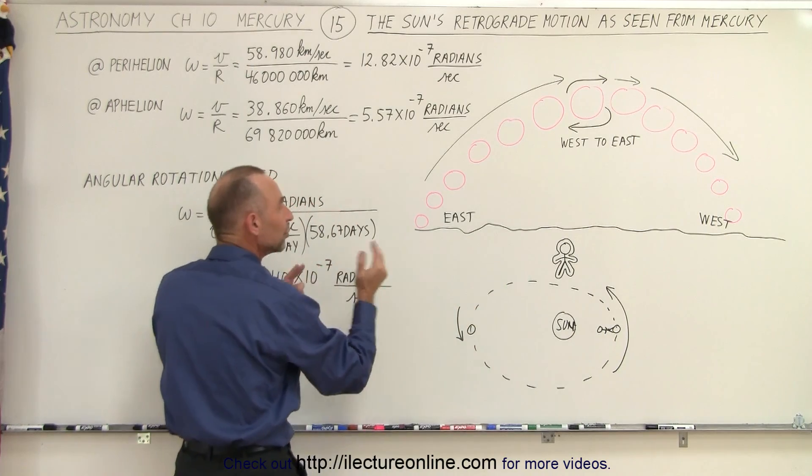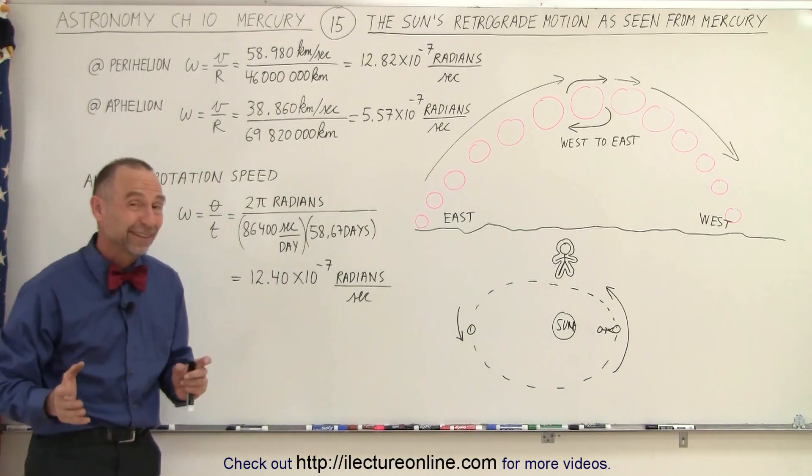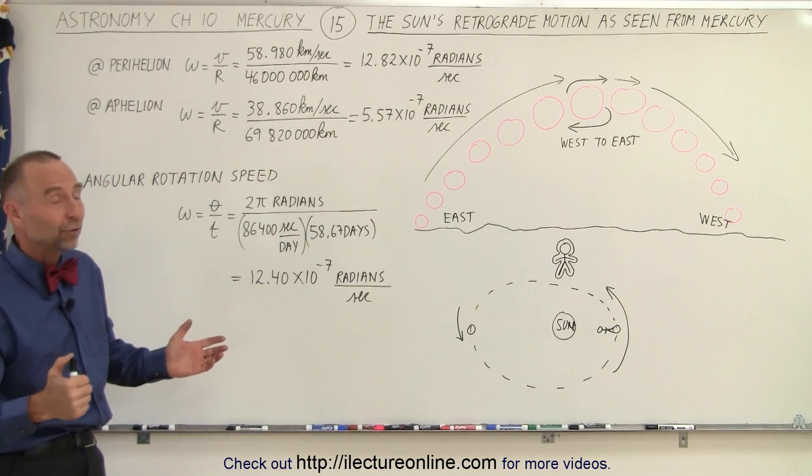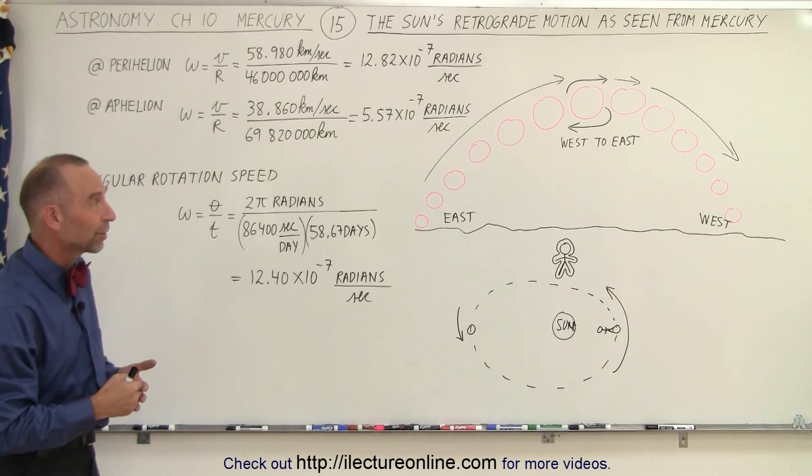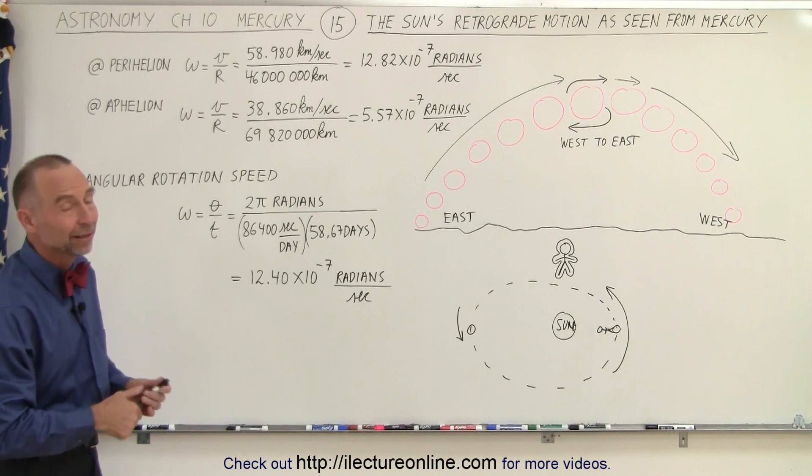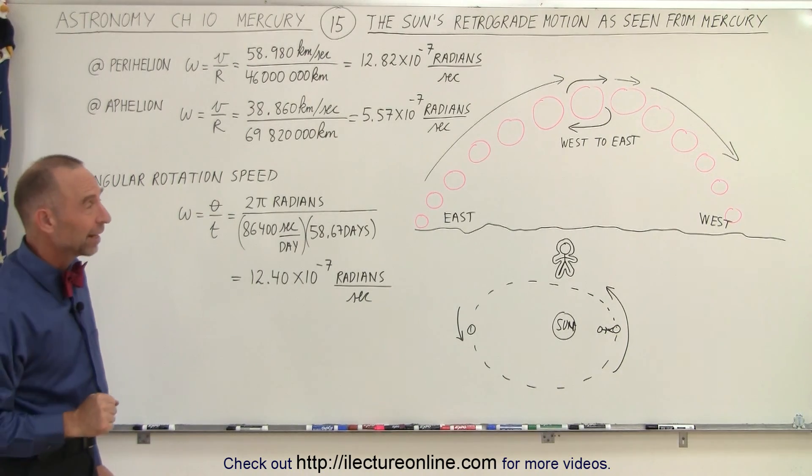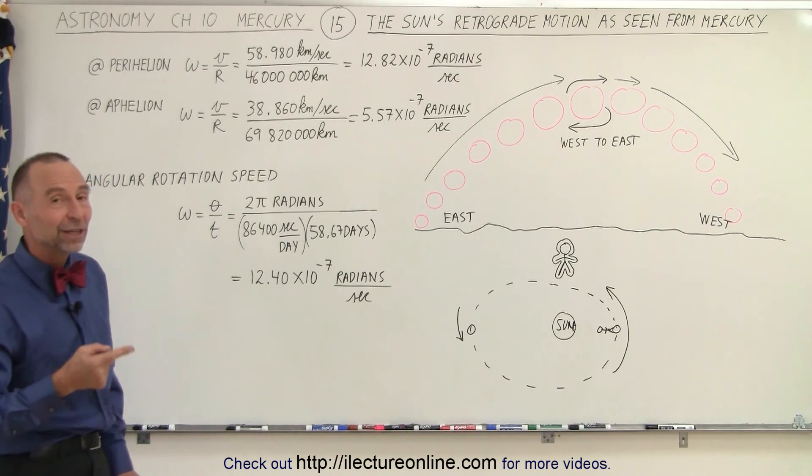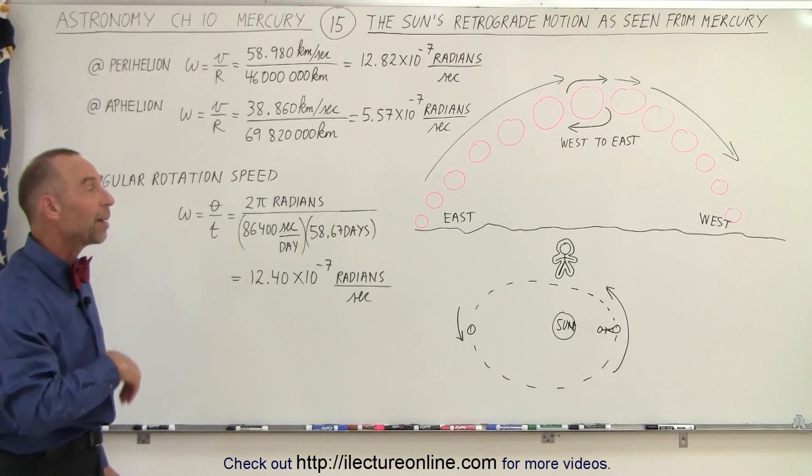That's very unique, the only place in the solar system where you actually have something like that happen. You will not have that on any other planet. Of course on Venus, we'll get to that when we talk about Venus, since the rotation of the planet is in opposite direction, retrograde rotation.